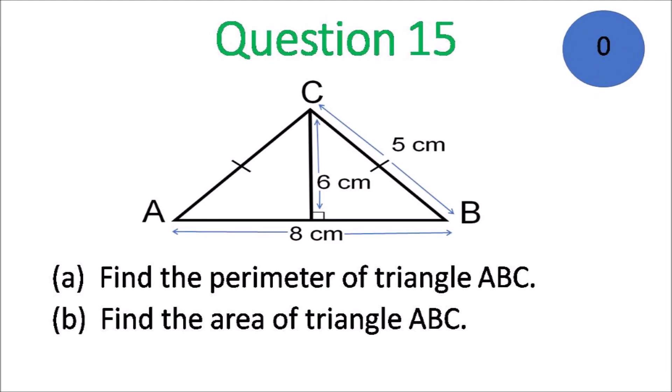Question 15, part A: find the perimeter of triangle ABC. Part B: find the area of triangle ABC.